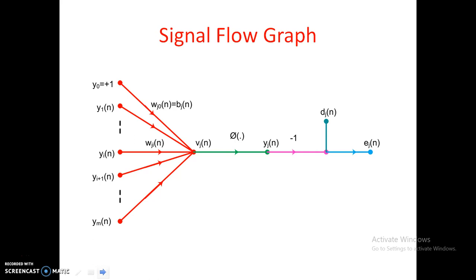Once all these weights are multiplied with the inputs or activations and summed up, we get vj(n), which is the net input or induced local field. Once we have that, it is processed through the activation function φ(·), which gives the output yj(n).